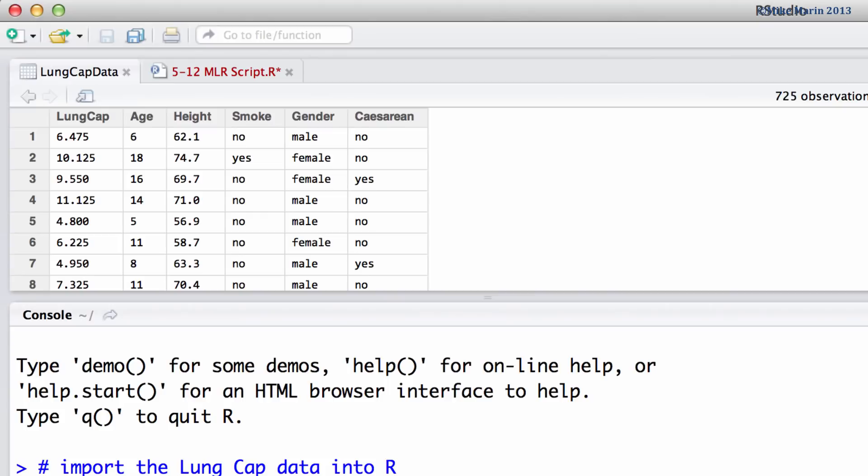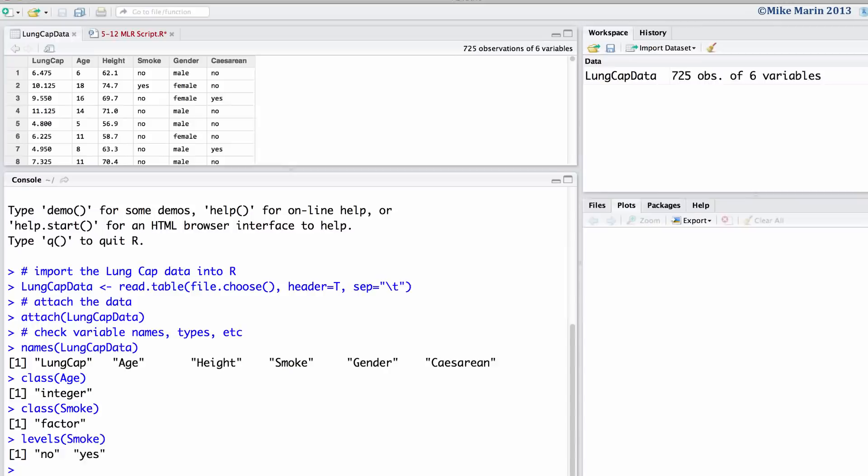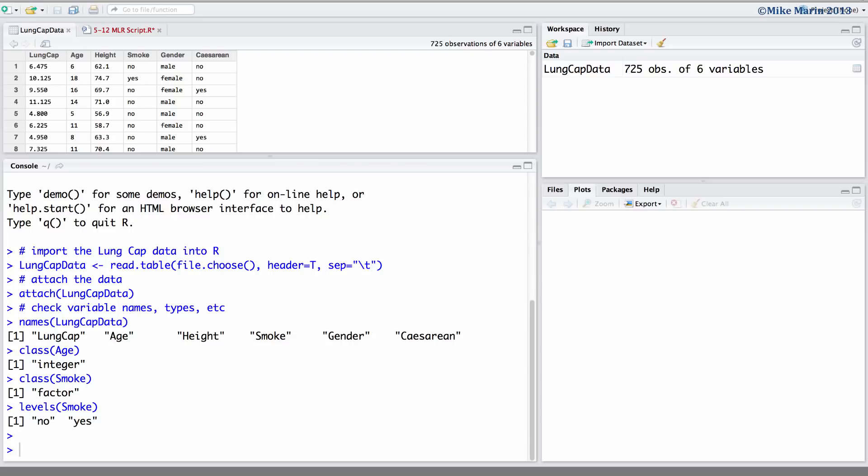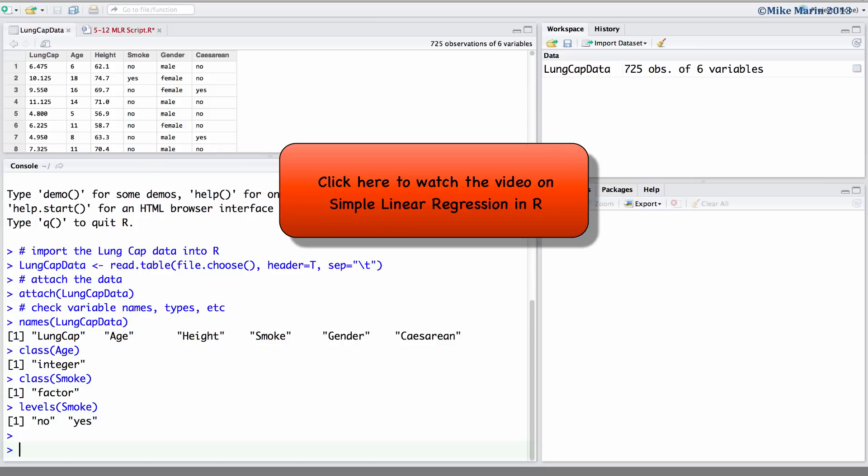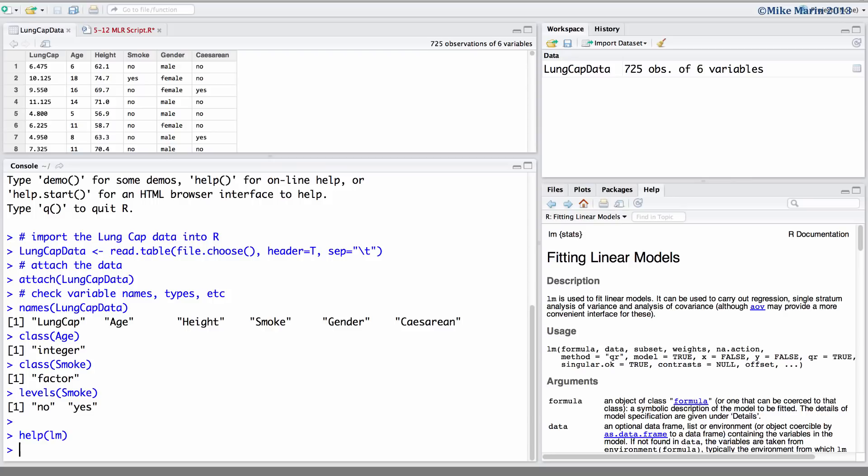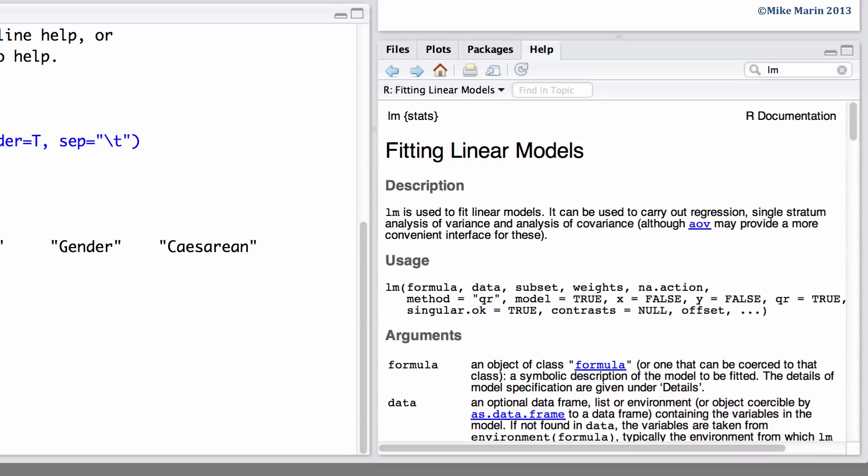We will be working with the lung capacity data that was introduced earlier in this series of videos. I've already gone ahead and imported the data into R and attached it. Our outcome variable will be lung capacity. To fit our linear model we will be using the LM command. You can access the help menu by typing help and the name of the command in brackets or by typing the command name directly into the help search window.